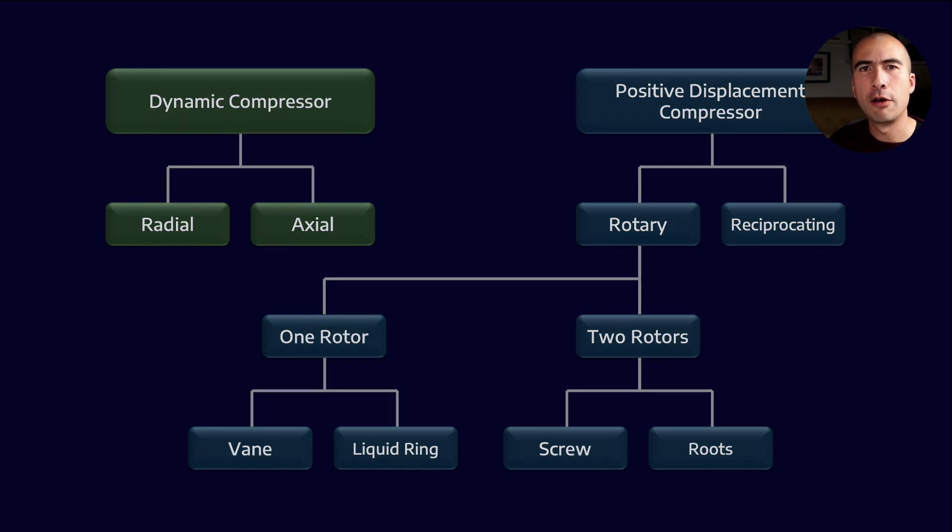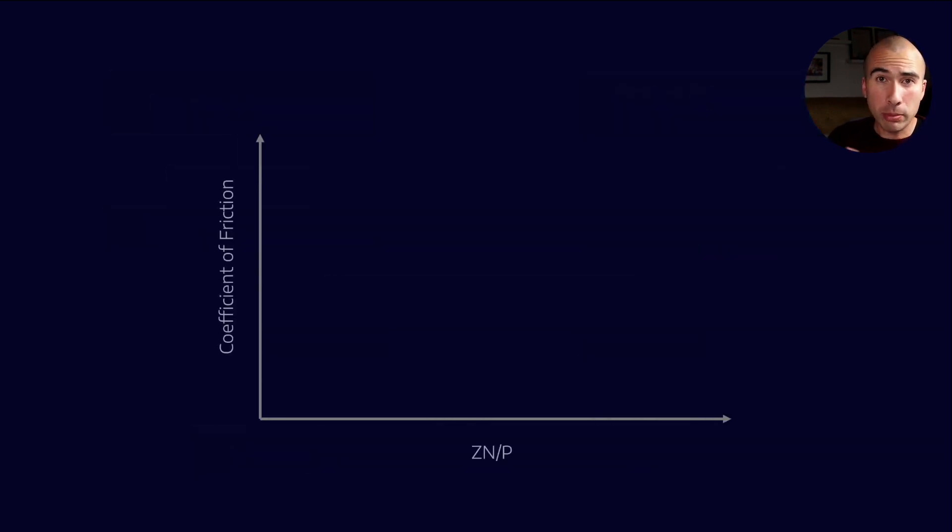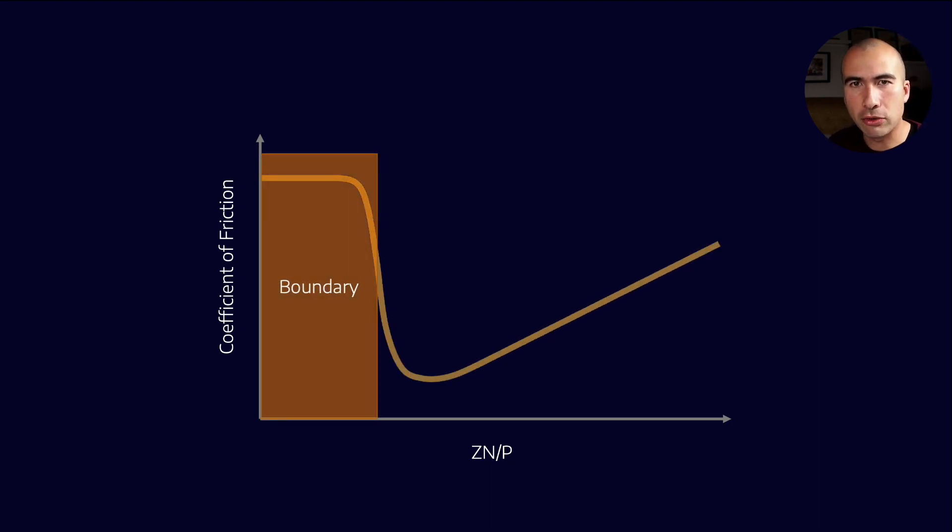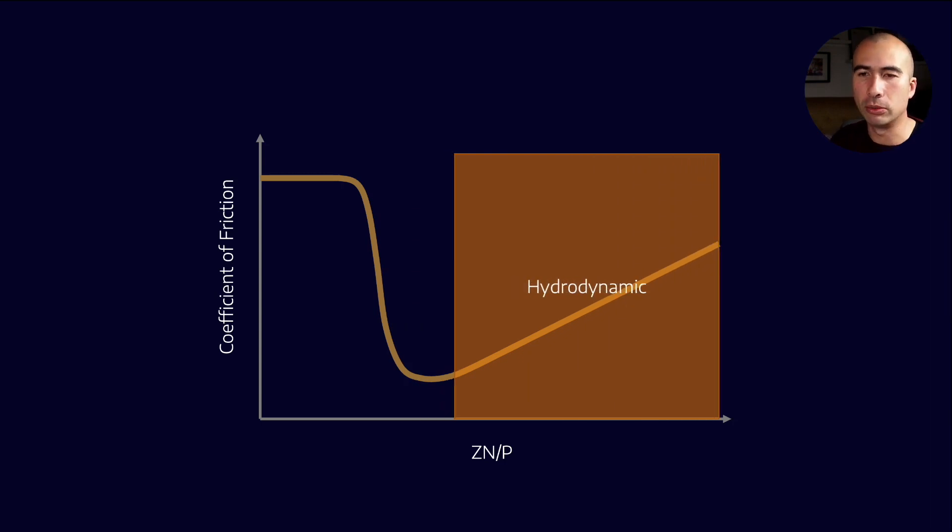We need a simplified model for compressor lubrication. Going back to our Stribeck curve, which is the foundation of most of tribology, remember that we have three different lubrication regimes. You've got boundary, you've got mixed, and hydrodynamic lubrication. Hydrodynamic can probably be split into hydrodynamic and elasto-hydrodynamic. But fundamentally, we want to use these paradigms to help us understand the different requirements from the compressor.